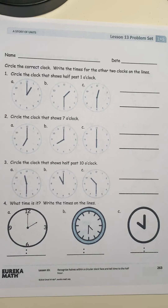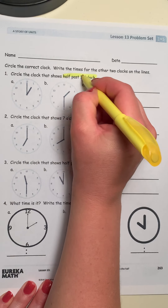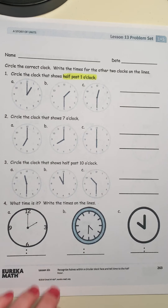The first sub direction says: circle the correct clock, and write the times for the other two clocks on the lines. Number one: circle the clock that shows half past one o'clock. I'm going to highlight those important words — half past one o'clock. If you don't have a highlighter, that's okay — you can underline it or circle it. Just like in a word problem, we want to make sure we pay attention to those important words.